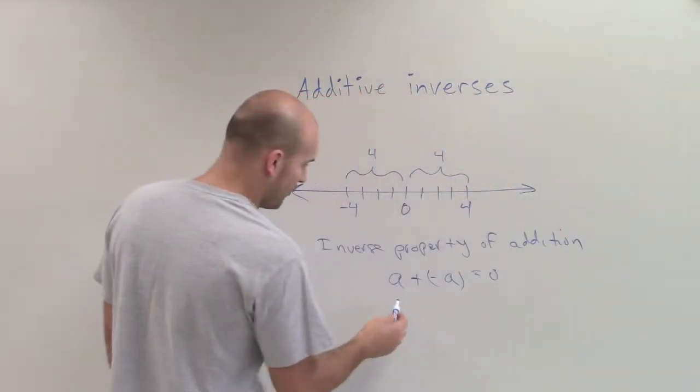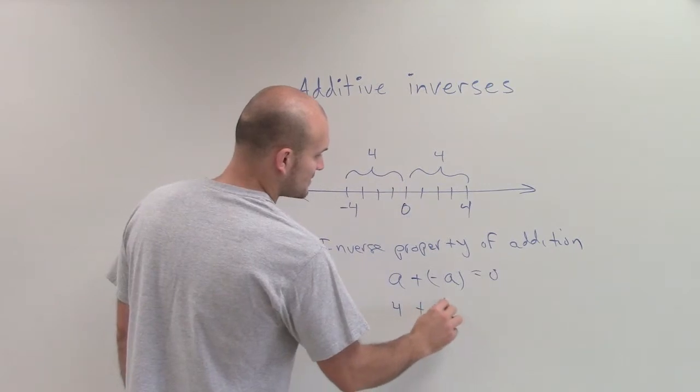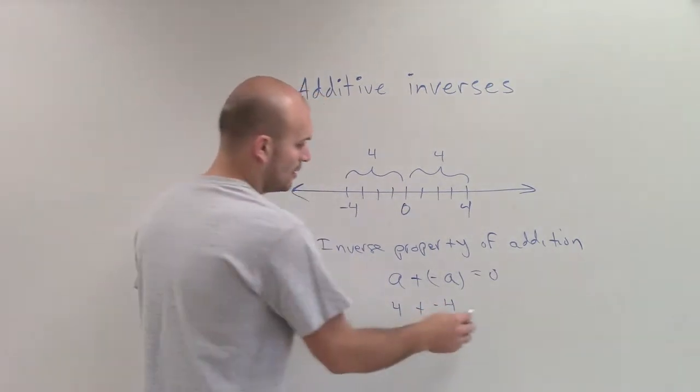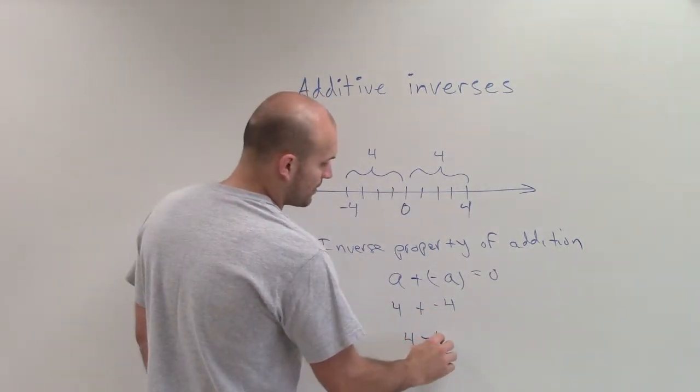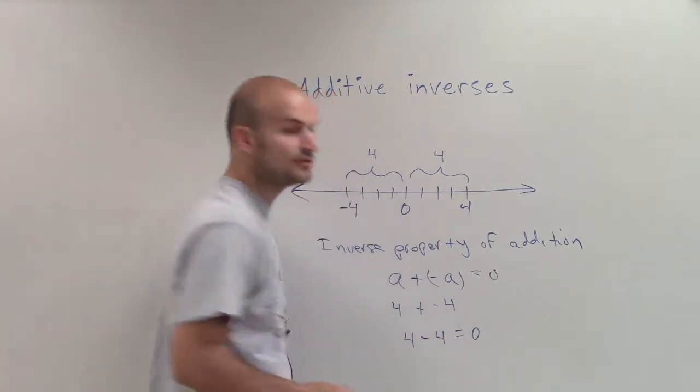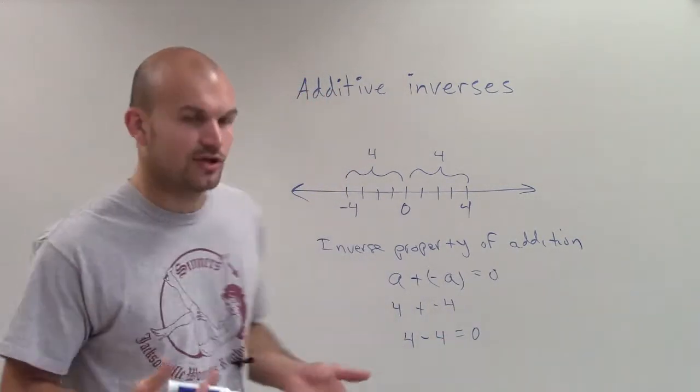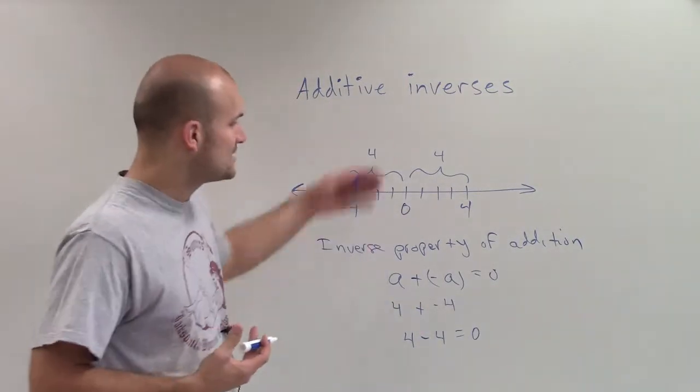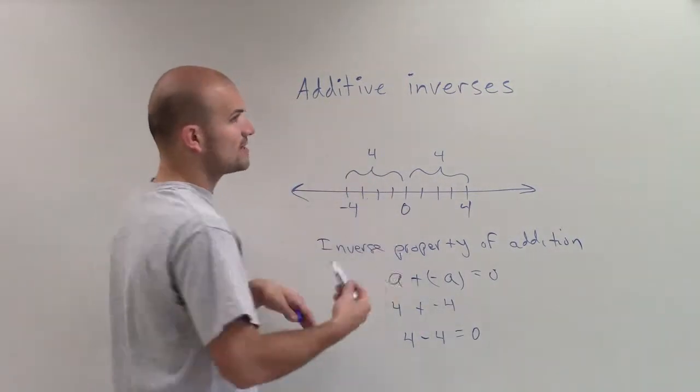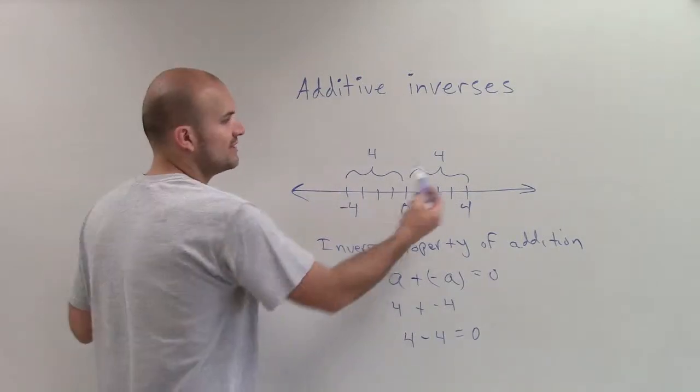So if I take 4 plus negative 4, we can rewrite that as 4 minus 4, which we know is going to be equal to 0. So when we're talking about additive inverses, we're talking about what number added to a number is going to give it to be 0.